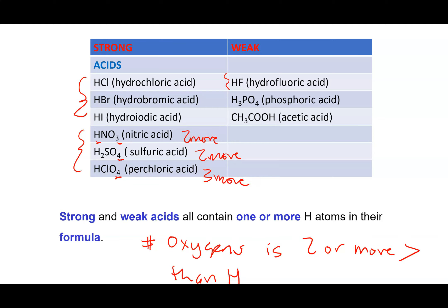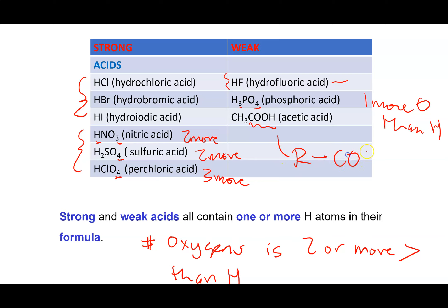Weak acids include hydrofluoric acid as a special case by itself. There are also oxoacids that don't have enough oxygen — for example, phosphoric acid has only one more oxygen than hydrogen, so it doesn't meet the criteria for being strong. The other major class of weak acids is carboxylic acids, where the formula always ends in COOH — all of those are weak. Probably the most famous weak carboxylic acid is acetic acid, the acidic component in vinegar.